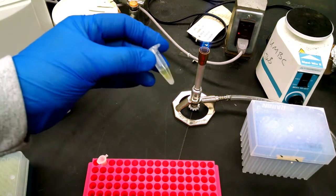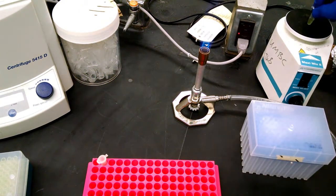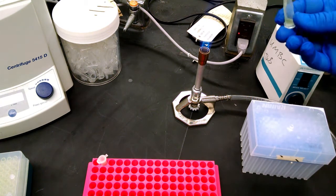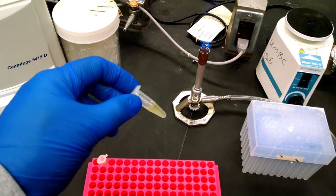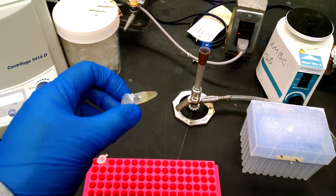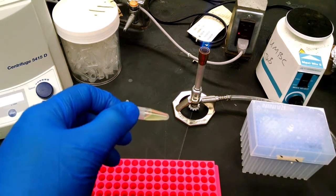We're going to take this, give it a quick vortex to mix it up. Then we're going to put it at 95 degrees for five minutes to open up the cells, break them open, and let the Instagene do its work taking out the metals.